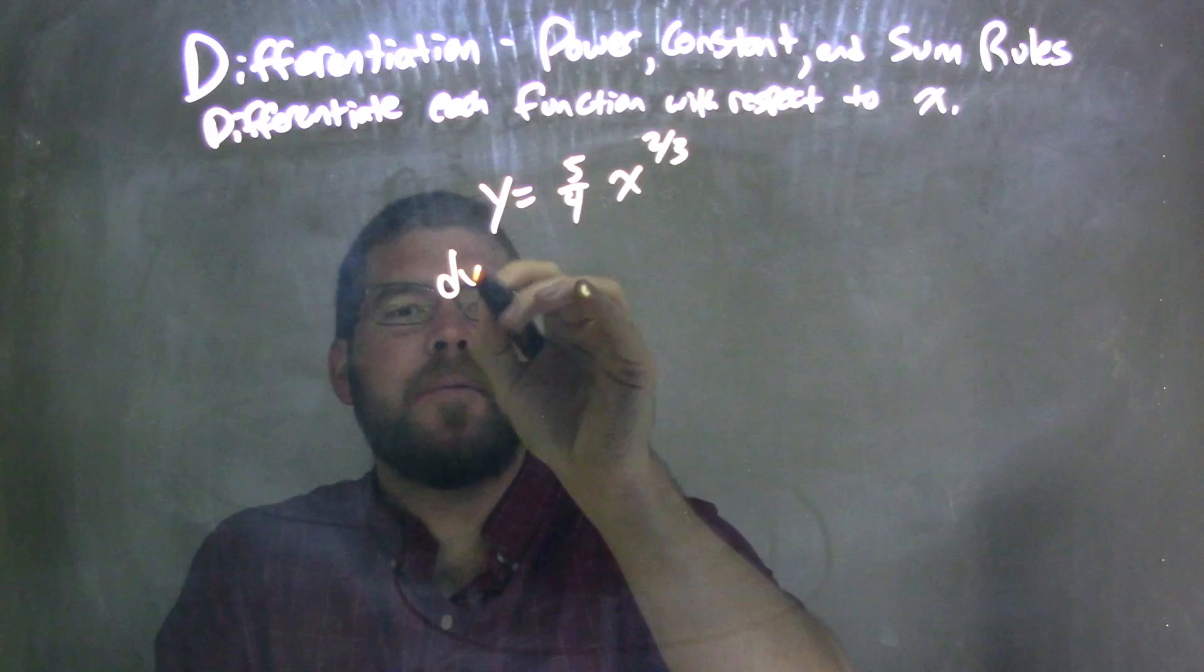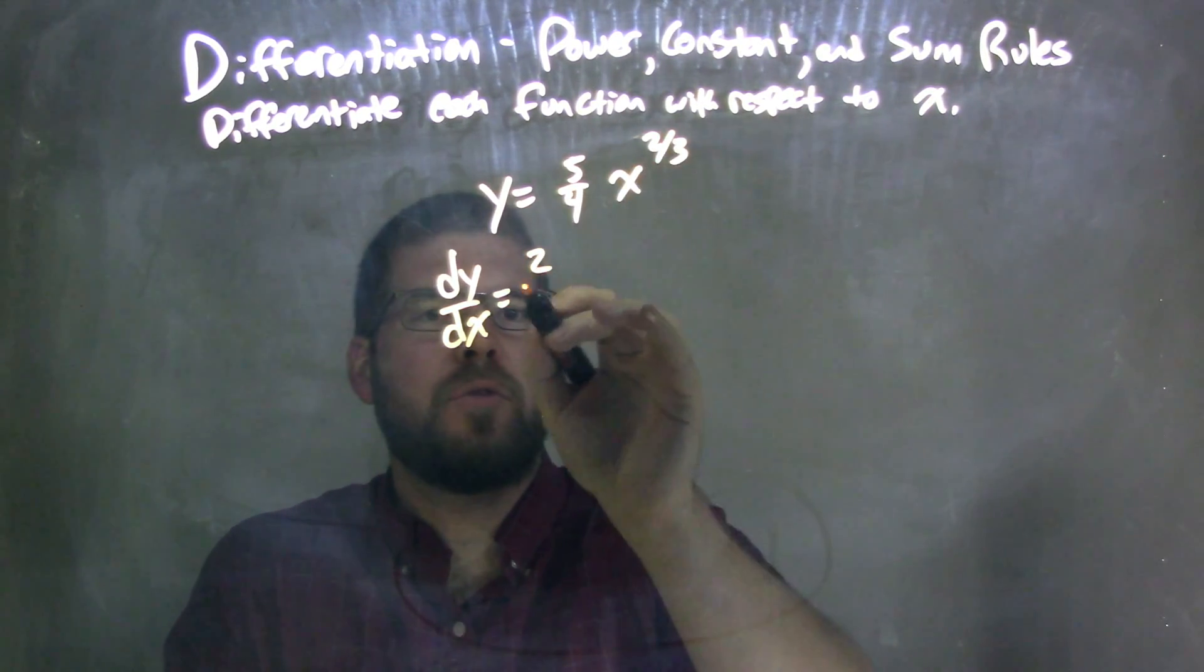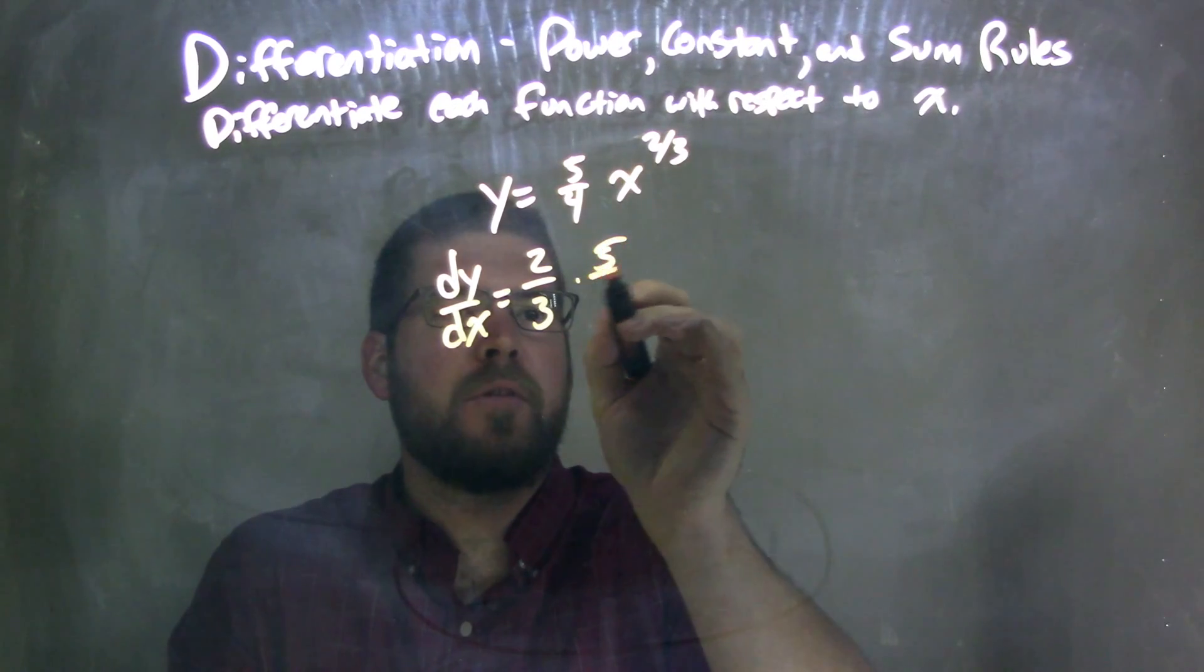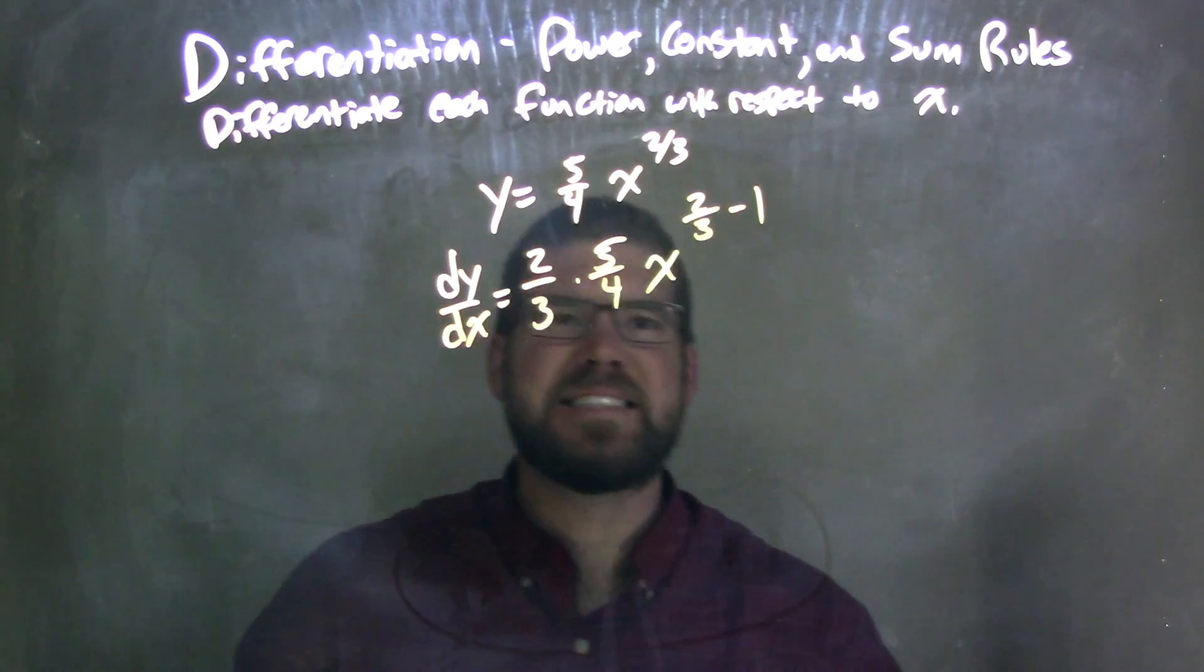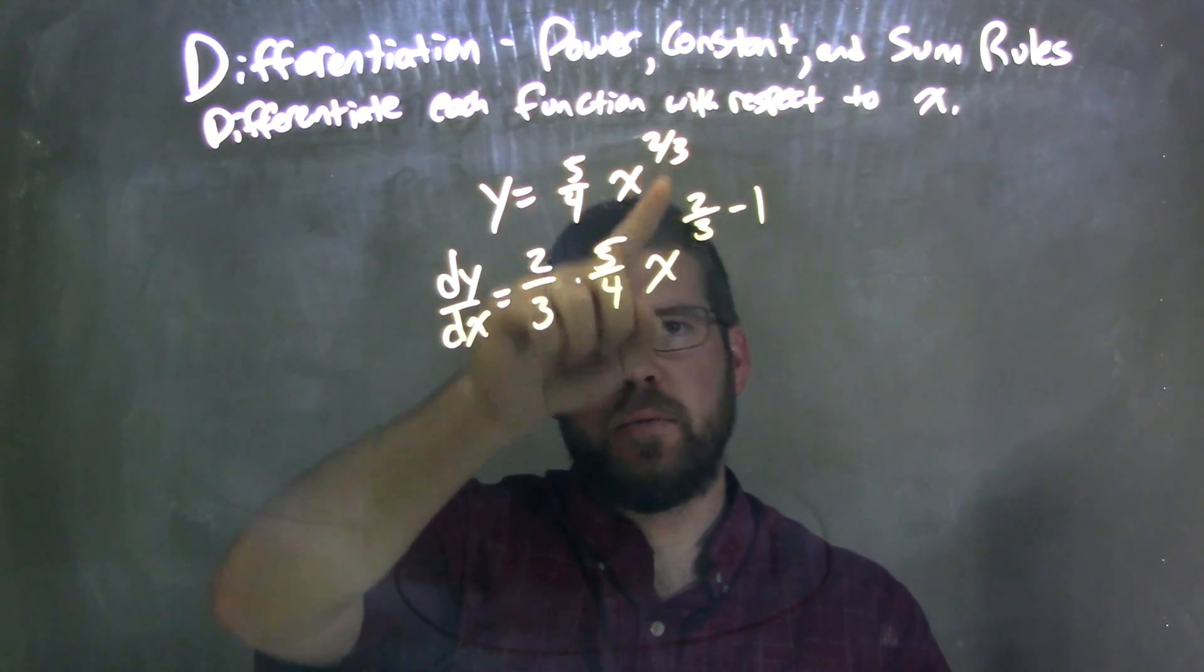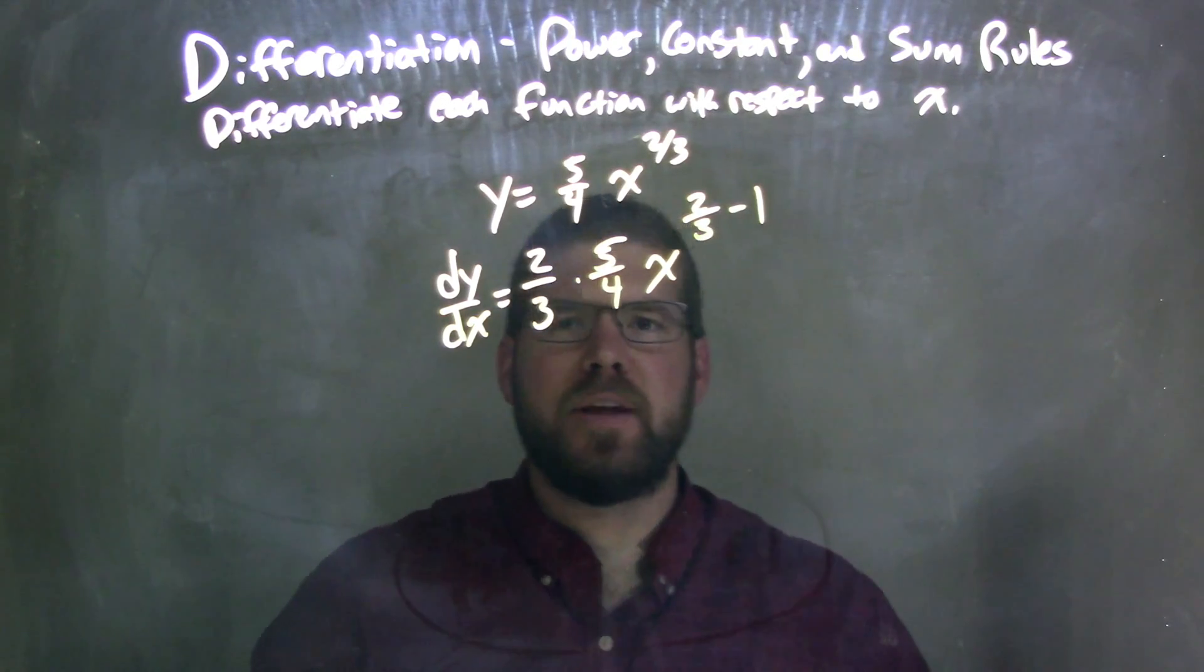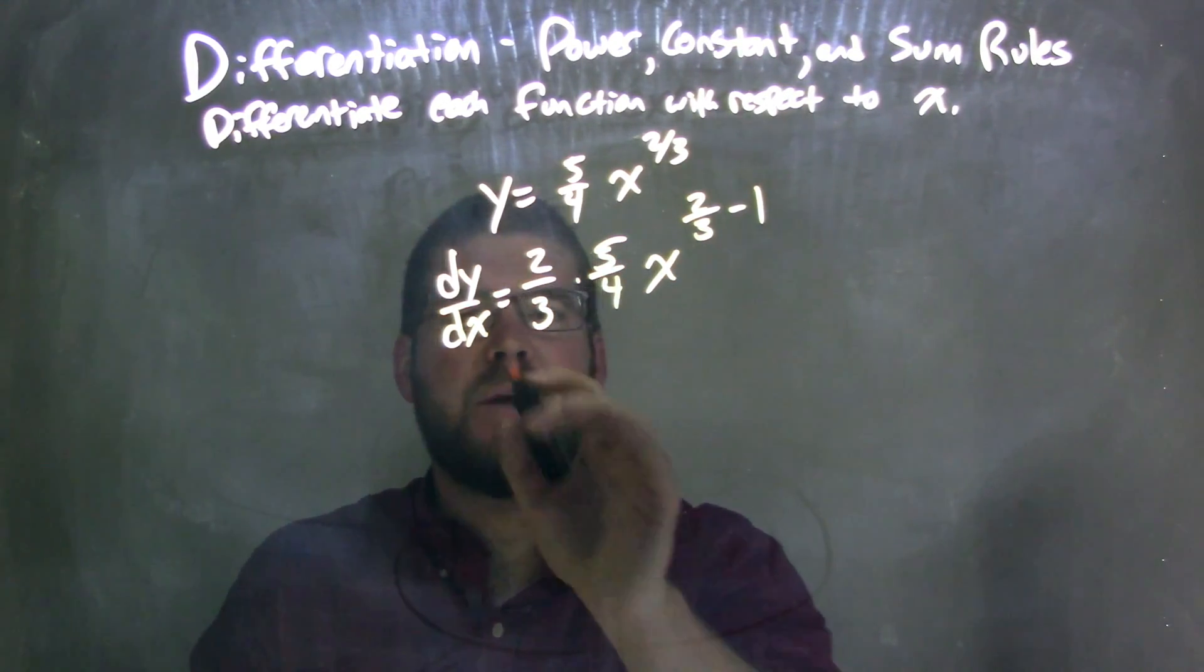So dy dx, doing the power rule, taking the derivative: power comes down, 2 thirds times 5 fourths x to the power 2 thirds minus 1. We take the exponent, subtract 1, and bring that exponent down in front for multiplication. And I'm writing completely sideways. Let's twist that at my next step here.